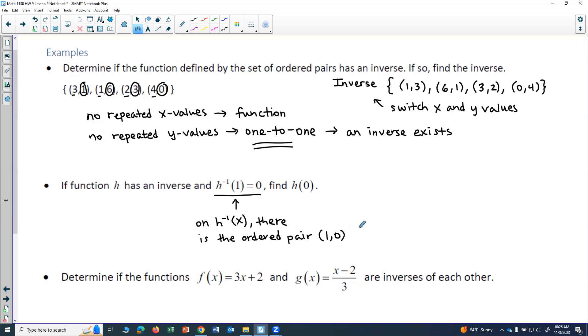So because of this, and the fact that I switched the domain and range, this would tell me that on h of x, there is the ordered pair (0,1).